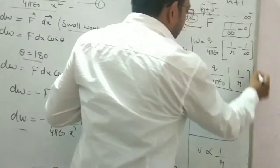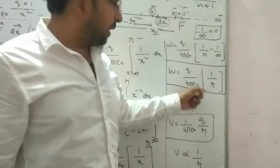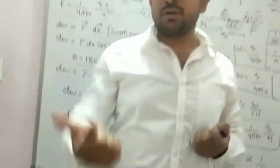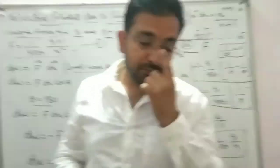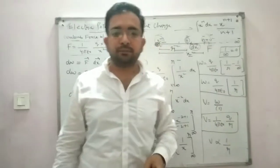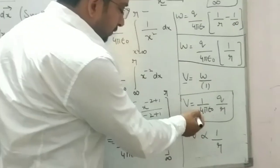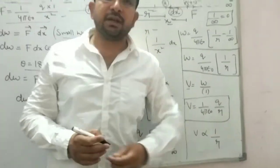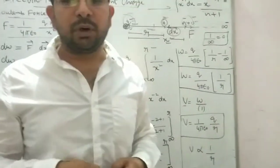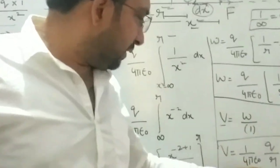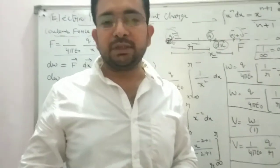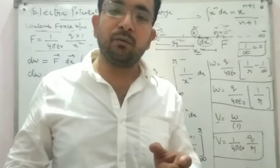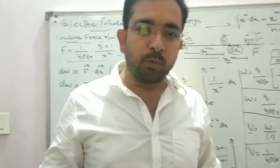So the formula for work done is W = Q/(4πε₀r). Since electric potential is defined as work done per unit positive charge, V = W/1. Therefore the formula for electric potential due to point charge is V = (1/4πε₀)(Q/r). From this it is very clear that potential is inversely proportional to r. This is the expression for electric potential due to a point charge.